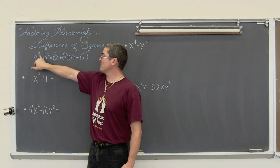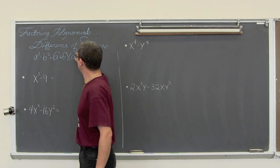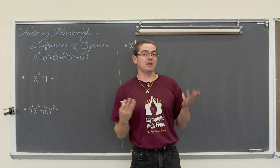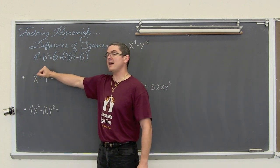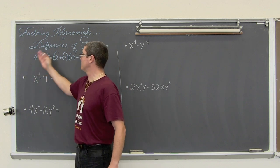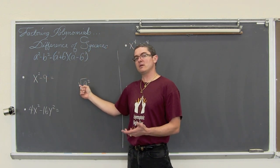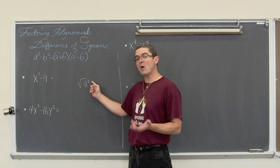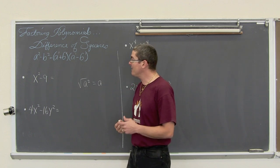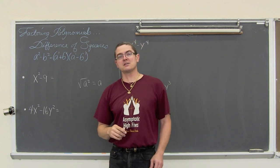You might notice that our exponents of two are simply becoming exponents of one. That is because you are square rooting the first term to get a and you are square rooting the second term to get b. The square root of a squared will undo its inverse math operation of squaring a number, so that is just going to be equal to a. So a is going to be the square root of the first term and b is going to be the square root of the second term.